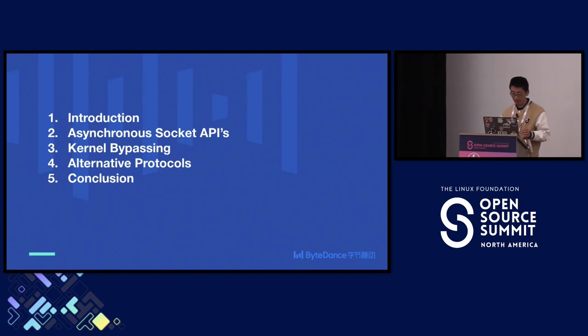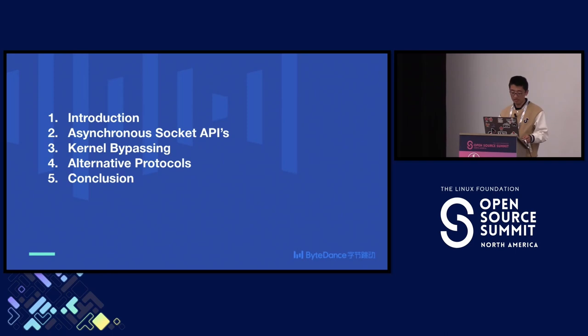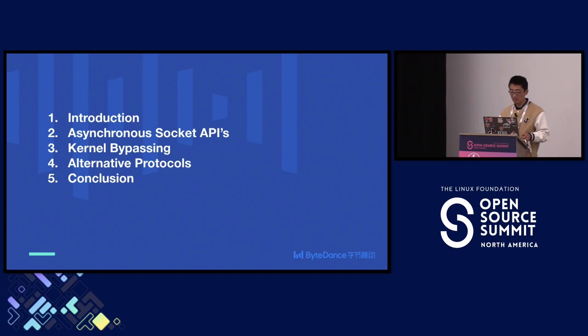Let's take a brief look at my talk today. First, I'm going to give an overview of this session, then move on to the asynchronous socket API — I assume we're already familiar with the traditional basic socket APIs. After that, I'll move to kernel bypassing, then come back to TCP and its recent development to improve performance. We'll also look at some other protocols other than TCP, and finally I'll draw some conclusions.